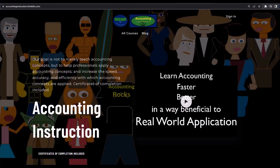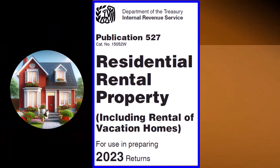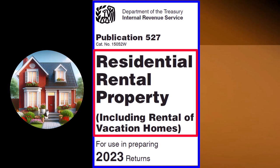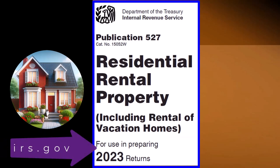If you would like a commercial-free experience, consider subscribing to our website at accountinginstruction.com or accountinginstruction.thinkific.com. This information can be found in Publication 527, Residential Rental Property Including Rental of Vacation Homes, tax year 2023, which you can find on the IRS website at irs.gov.